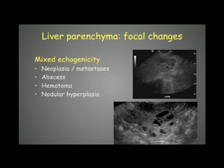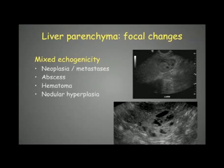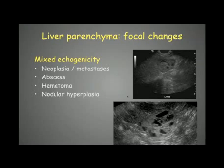Mixed echogenic lesions have components that are both isoechoic and hypoechoic — for example, a round to ovoid lesion with anechoic or hypoechoic cavities and an isoechoic remainder. Mostly these represent neoplasia, but they can also be benign if due to hematomas, abscesses, or nodular hyperplasia.